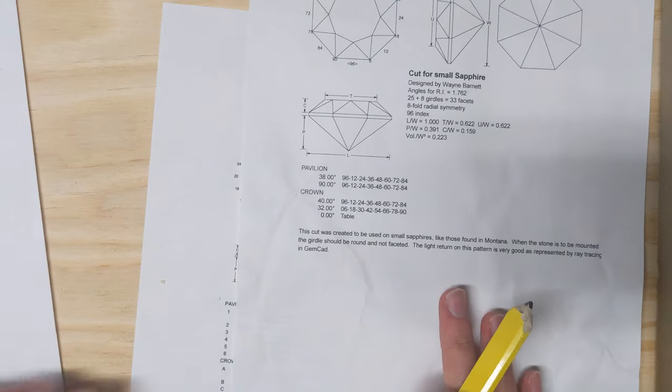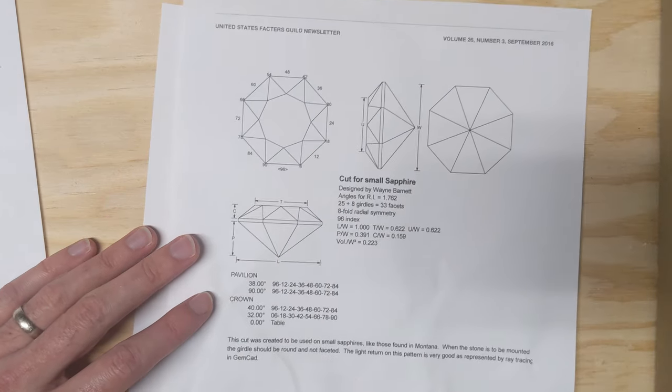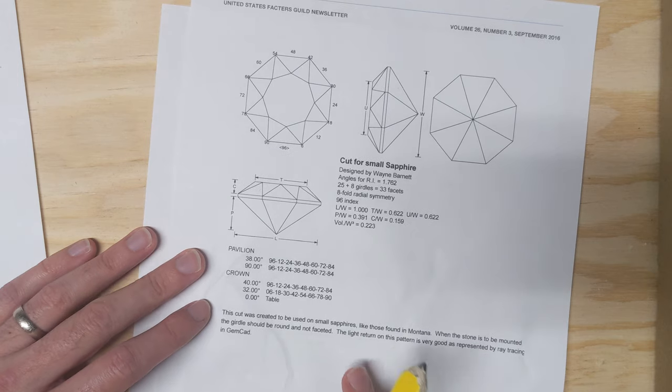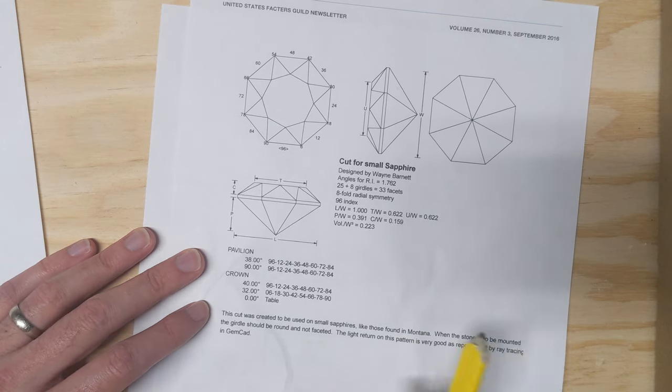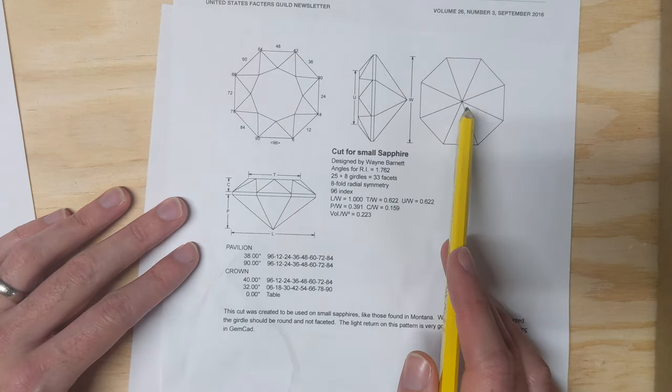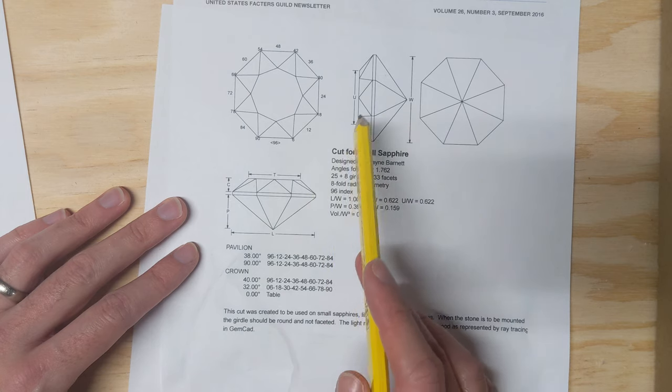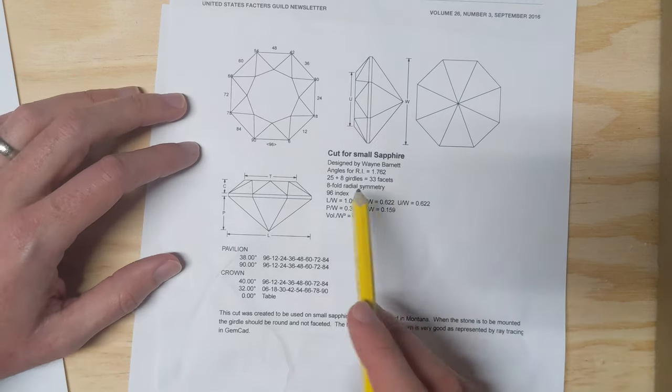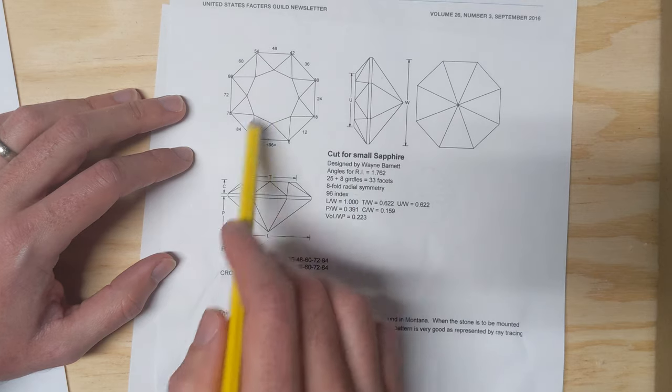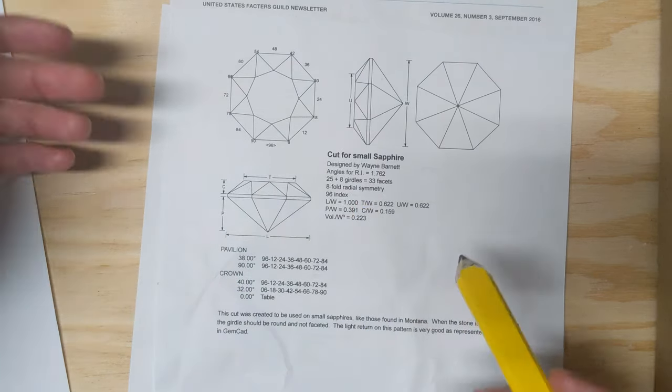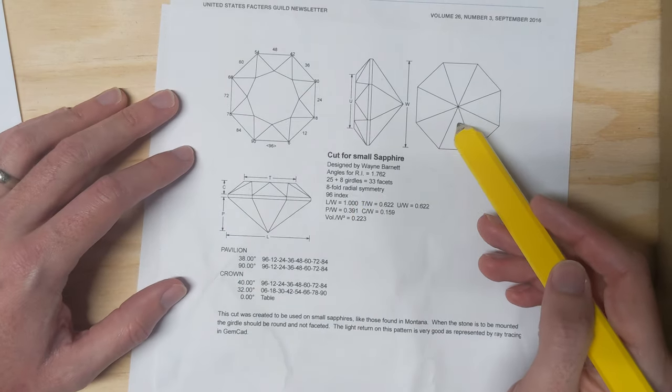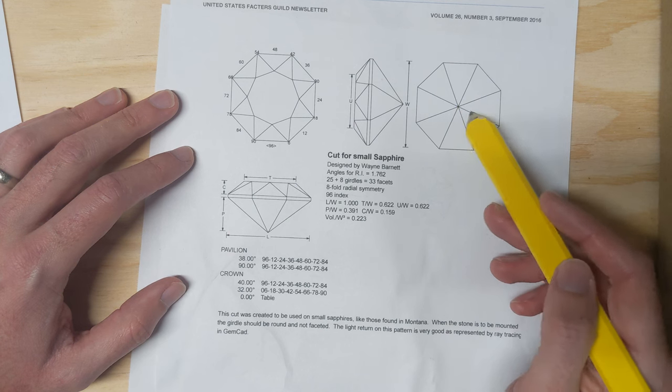I showed this one on my channel, the cut for small sapphire. This is also on the Faceter Guild newsletter, where you have the crown, the pavilion, and then the two side views. It's sort of mirror image there. Eightfold radial symmetry means you can cut this in eight different directions and it'll be symmetrical, as you can see. The pavilion is just basically eight cuts.